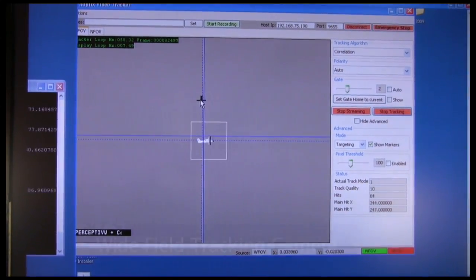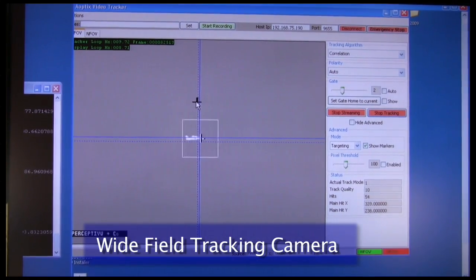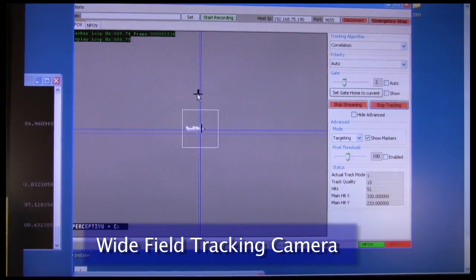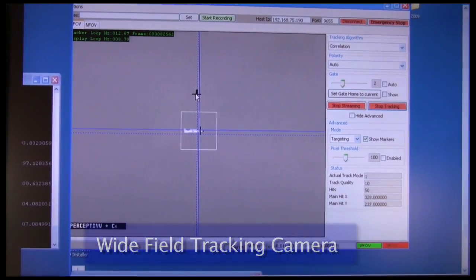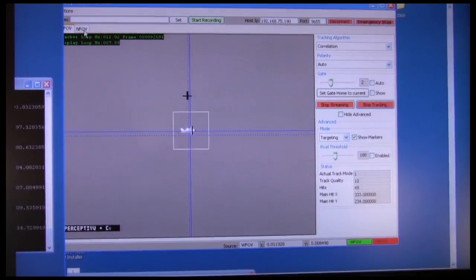Once in the wide field of view, the system can automatically narrow the field of view to precisely track each terminal's beacon, an 850 nanometer emitter beaming from each system.